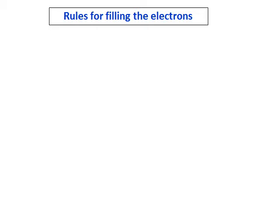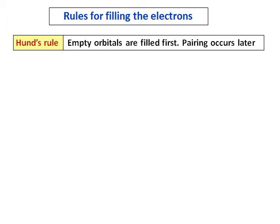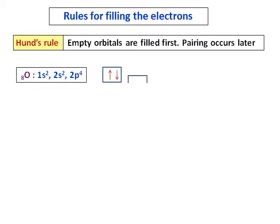The second rule is Hund's rule. According to this, empty orbitals are filled first and pairing occurs later. For example, oxygen has the configuration 1s2, 2s2, 2p4. In the 1s and 2s levels, two electrons fill with opposite spins. In the p subshell, which has three boxes, we fill only empty orbitals first, and the fourth electron pairs up only after all empty orbitals are occupied.